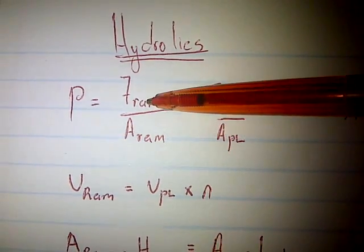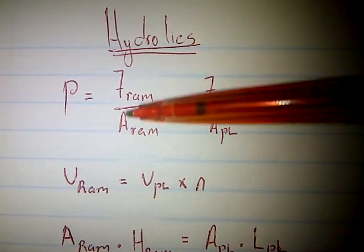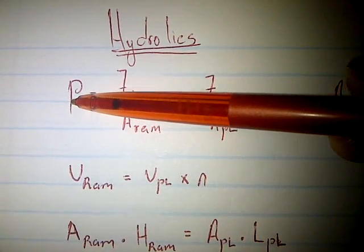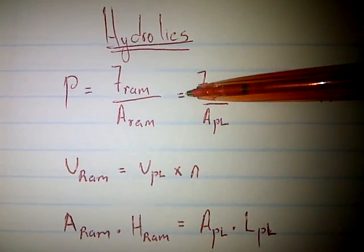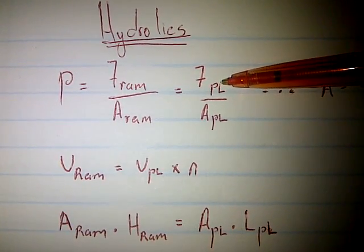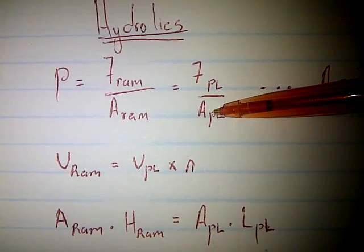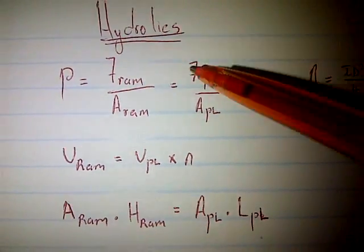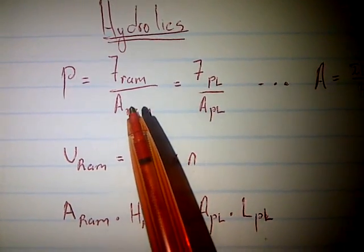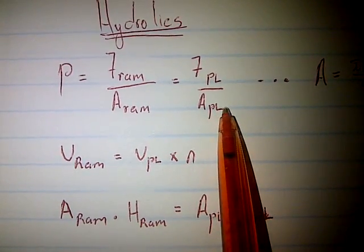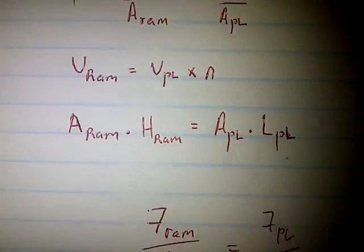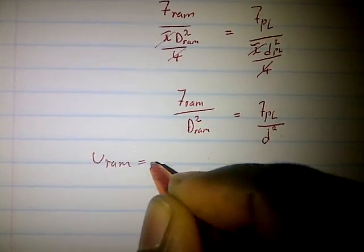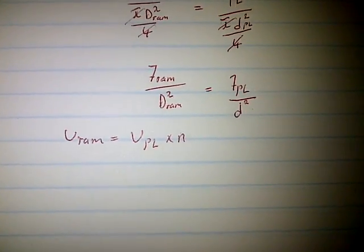The pressure formula confirms that pressure on the ram side equals pressure on the plunger side: pressure equals force of the ram divided by area of the ram, which also equals force of the plunger divided by area of the plunger. Now let's look at the volume formula: volume of the ram equals volume of the plunger depending on the number of strokes.